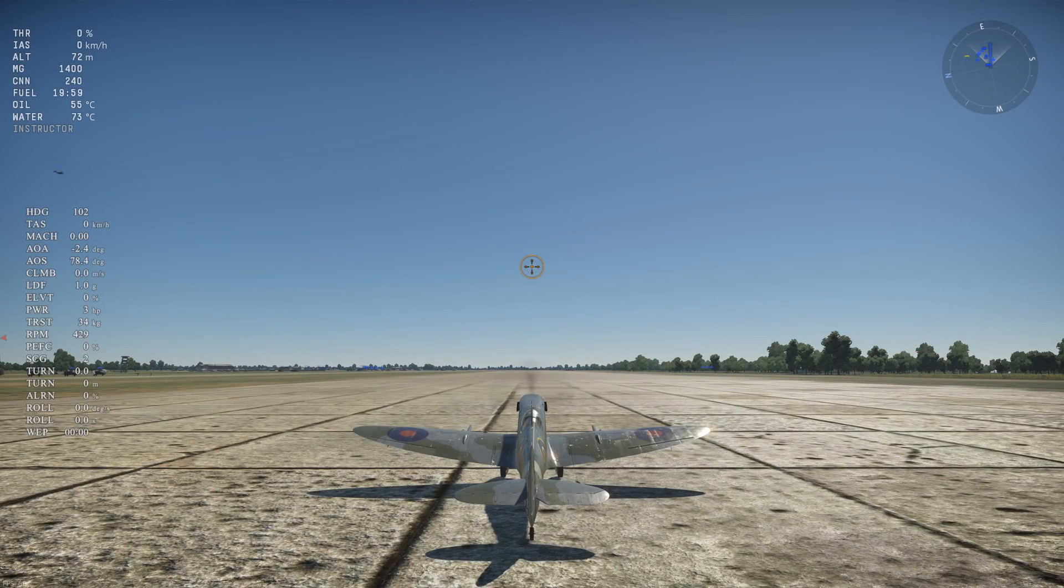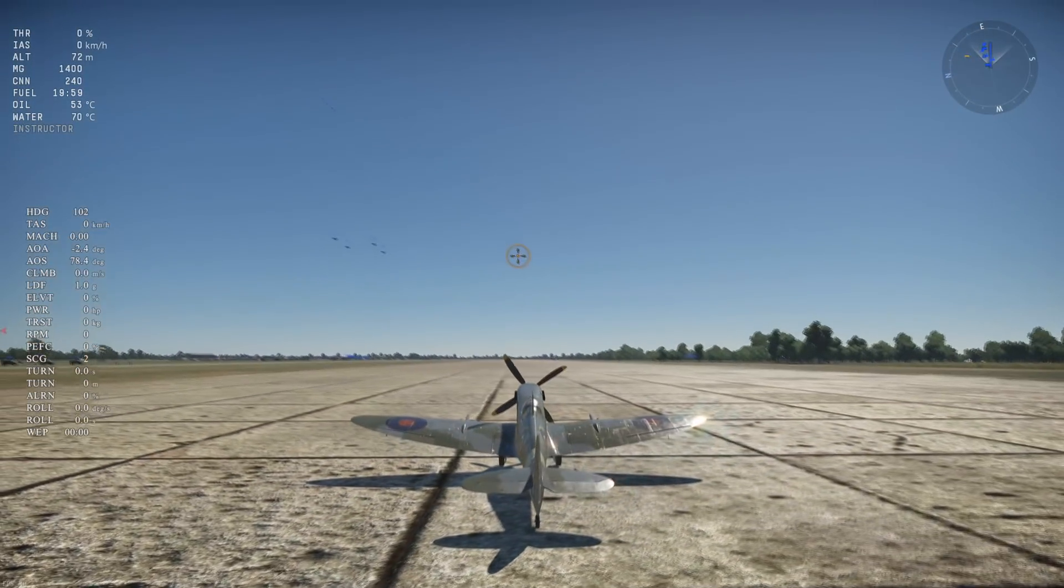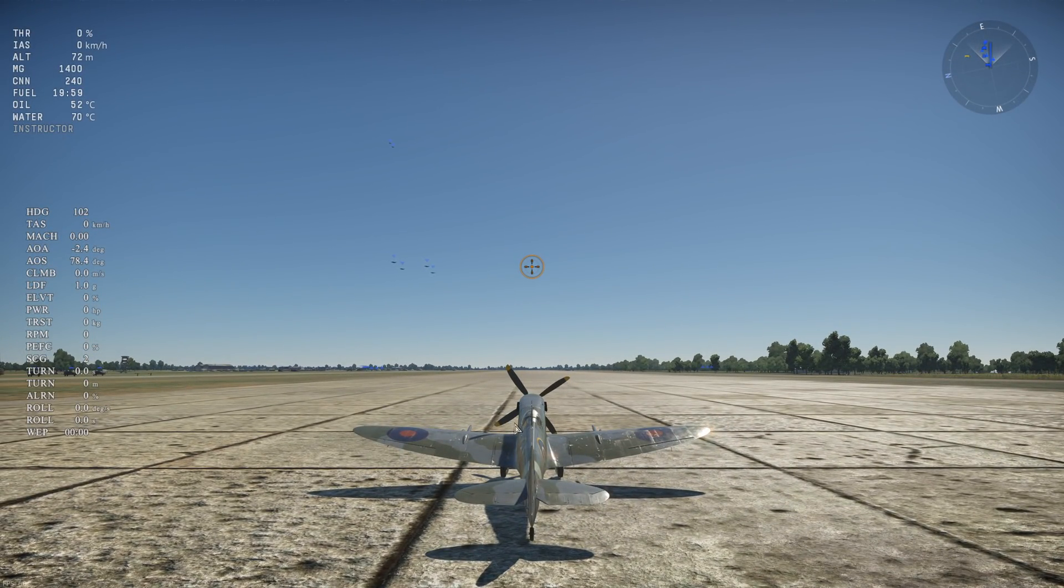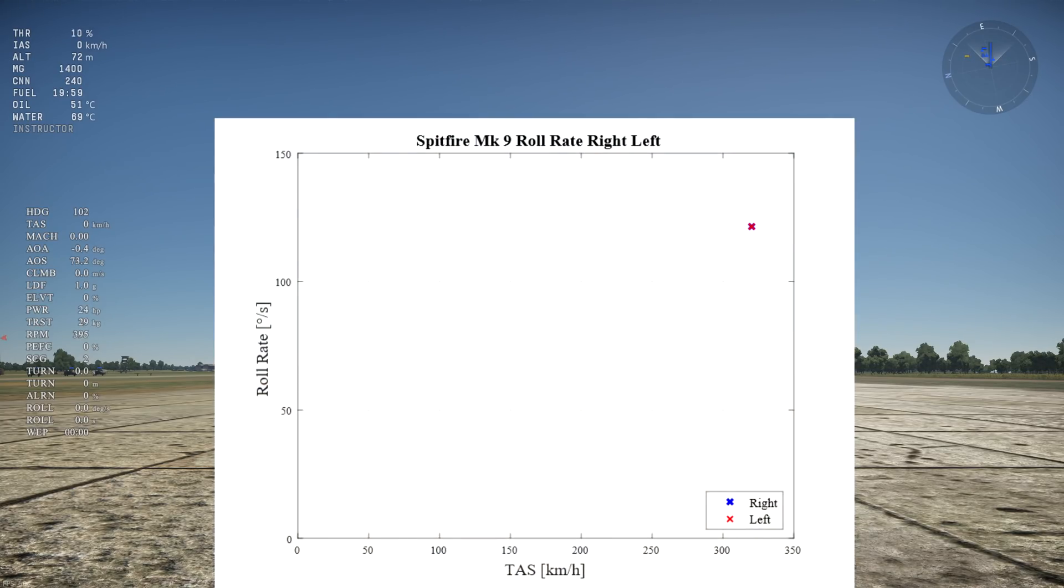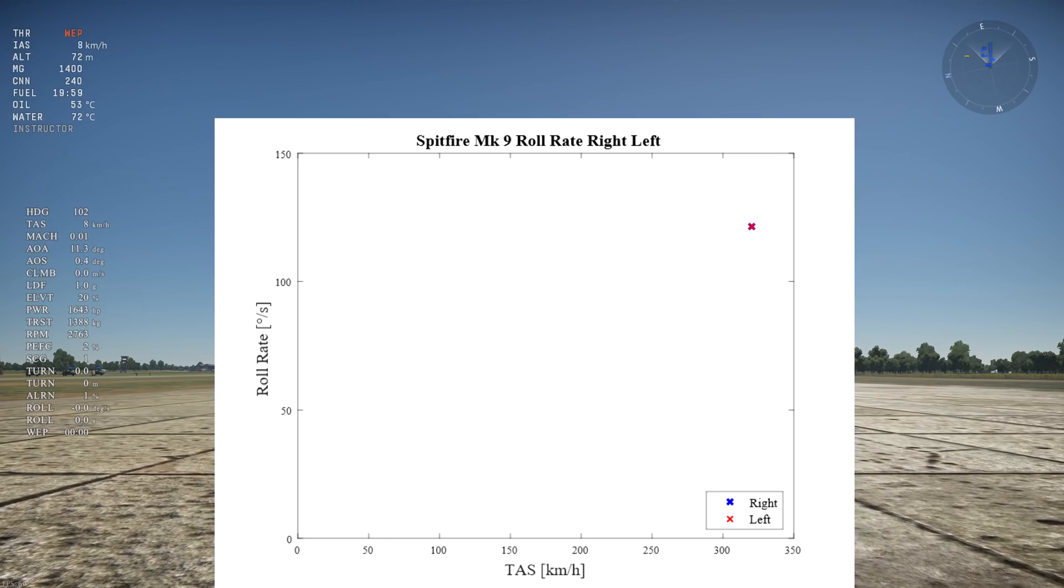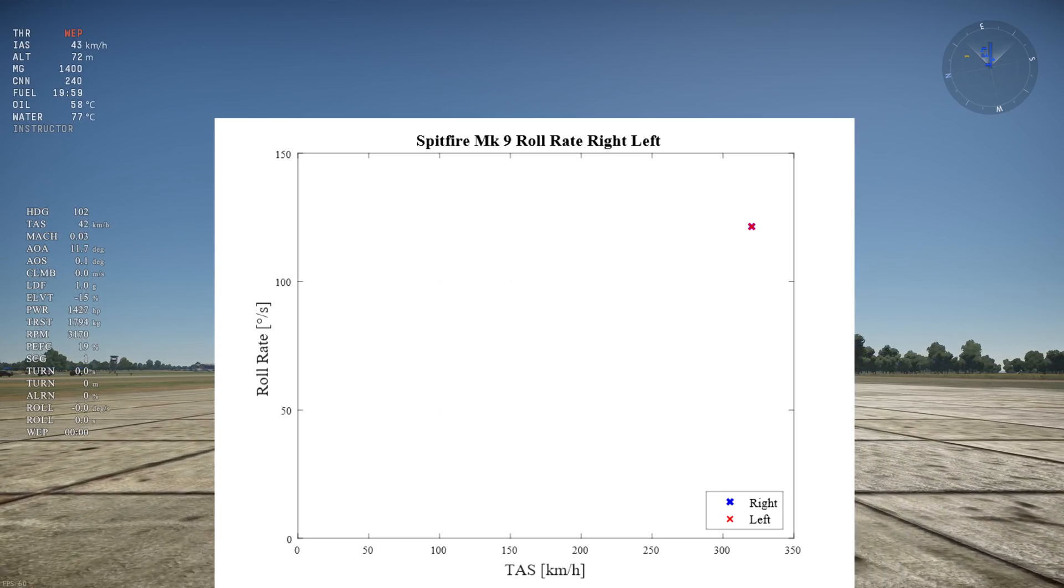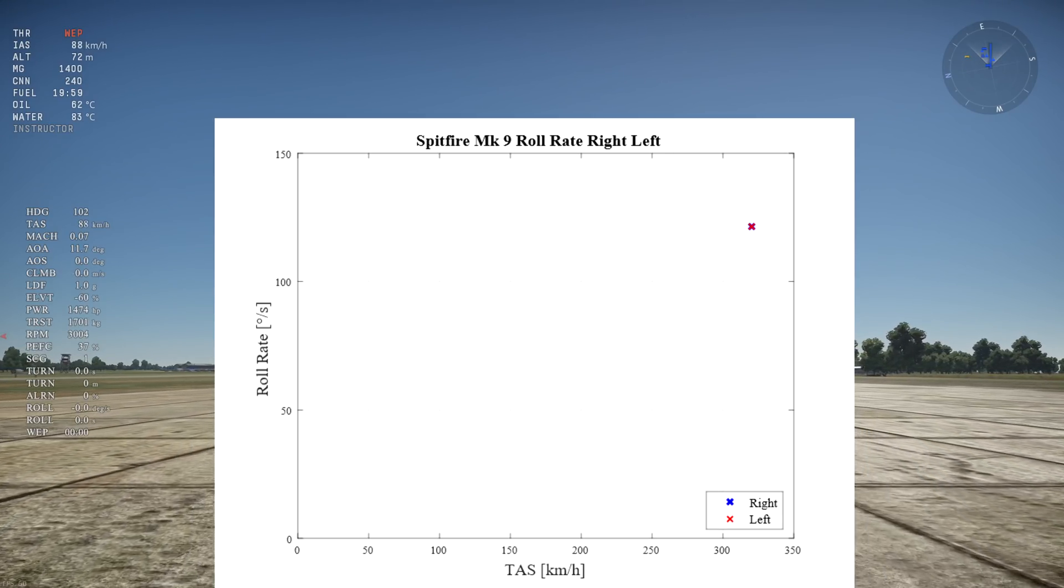In reality, aircraft that don't have counter or contra-rotating propellers experience engine torque. If the engine spins the propeller clockwise, the aircraft will experience counterclockwise torque due to Newton's law, which will improve roll in the counterclockwise direction, but worsen roll in the clockwise direction. The Spitfire MK9's prop spins clockwise, so we should expect our counterclockwise or left roll to be faster than the right roll. A quick test shows that both roll directions have equal roll rates in realistic battles. Torque is turned off in RB while it's on in simulator battles.